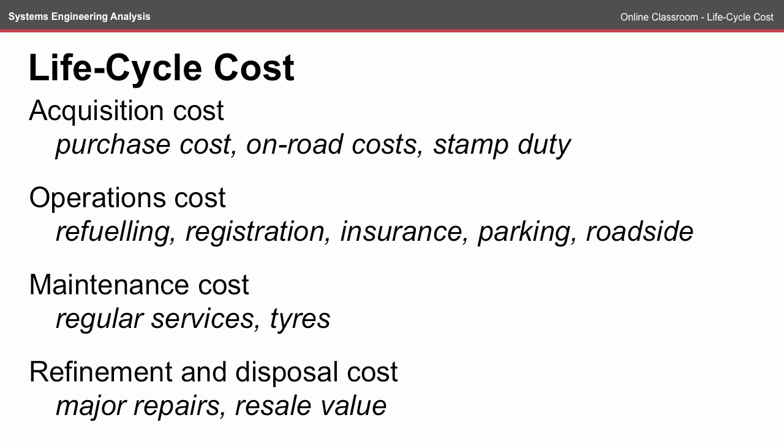In our car example, acquisition costs are things like the purchase, on-road and stamp duty — these are things that you'll probably pay up front. Operations costs are things that you'll pay for throughout the life of the vehicle, things like refueling, registration, insurance, parking and roadside assistance.